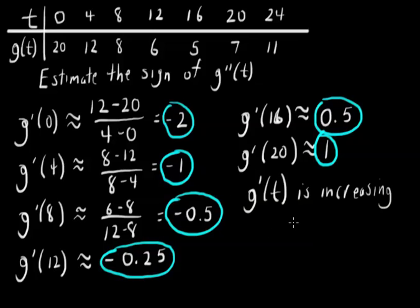All right, that tells us what's happening with the second derivative. G double prime of t. So if this function is increasing, remember when something is increasing, its derivative is positive. So g prime of t is increasing. So its derivative, the second derivative, is positive.